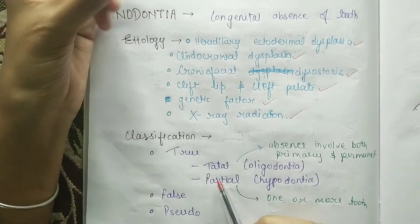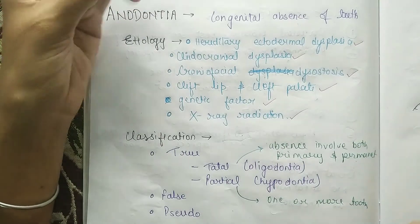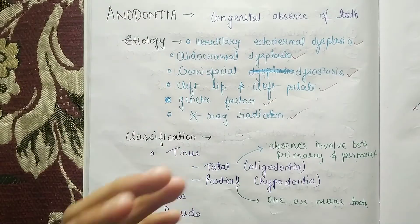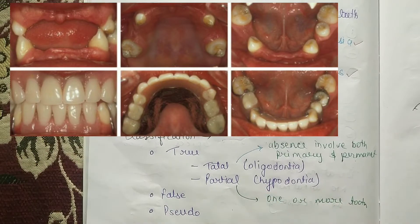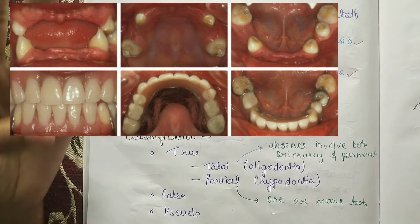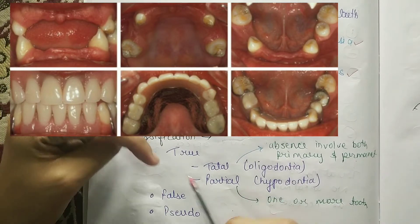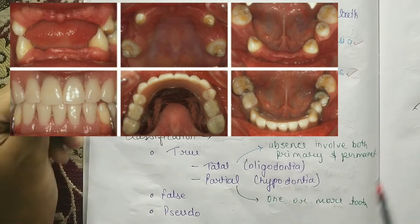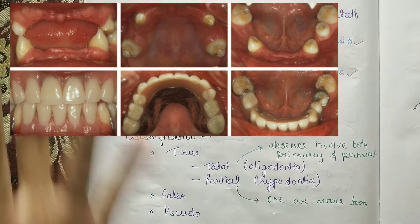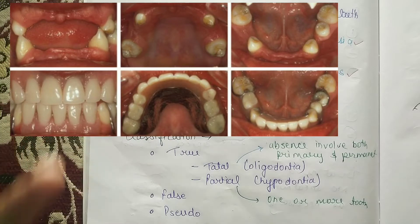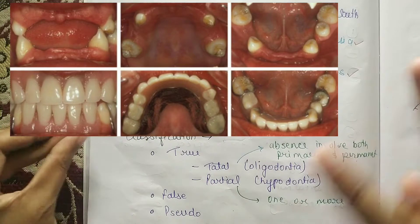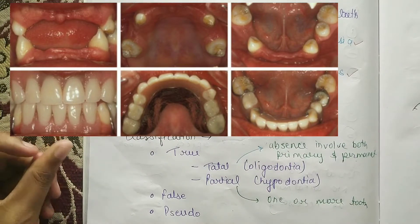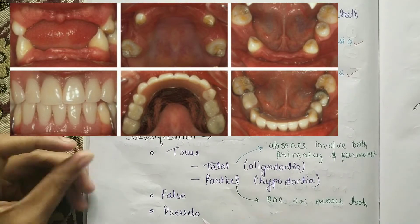First is true anodontia, which is again divided into total anodontia — also called oligodontia — and partial anodontia, also called hypodontia. Then we have false anodontia and pseudo anodontia. True anodontia means complete absence of primary and permanent teeth. Partial anodontia means one or more teeth are missing.